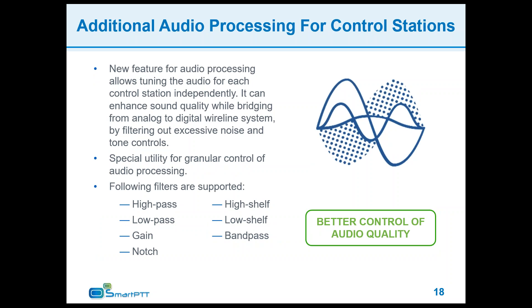We've added additional audio processing for when you are using control stations. For example, if you're bridging an LTR system into an IP site connect system, you might find bleed-through of trunking tones or other tones in the audio from the control station, which can affect audio quality and the bridging process. We've created a program to let you build different filters to better control audio quality, including high pass and low pass filters, high shelf and low shelf, band pass filters, gain, and notch filters.